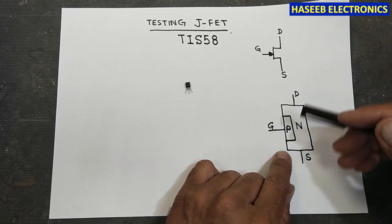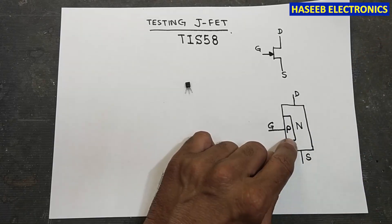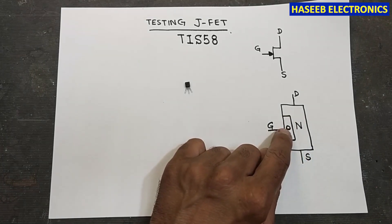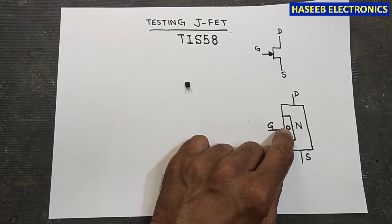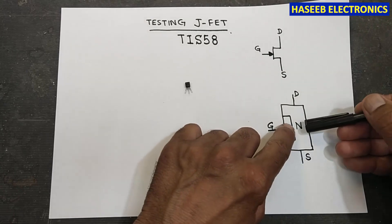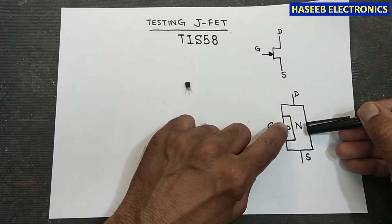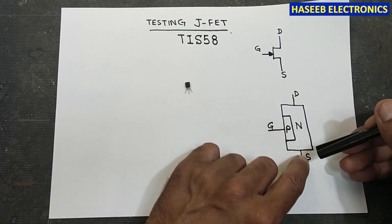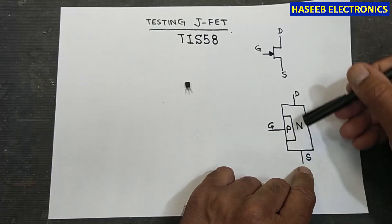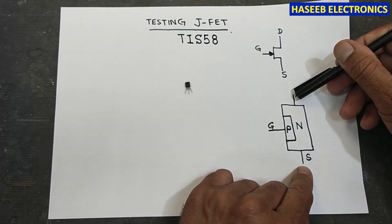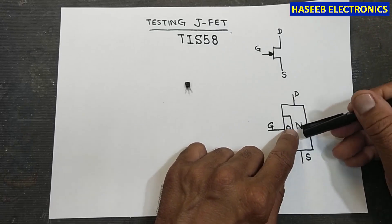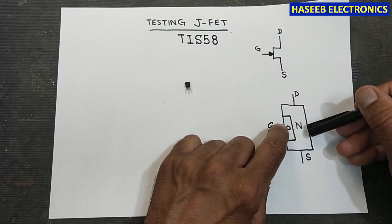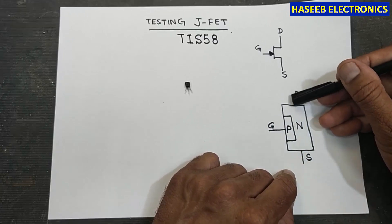The gate is produced on the substrate, which is the channel. When we apply a signal here it will close or open the path for electrons. Normally the path must be closed, so the source-to-drain resistance must be high. When we apply a signal, it will open the path and allow current to flow.